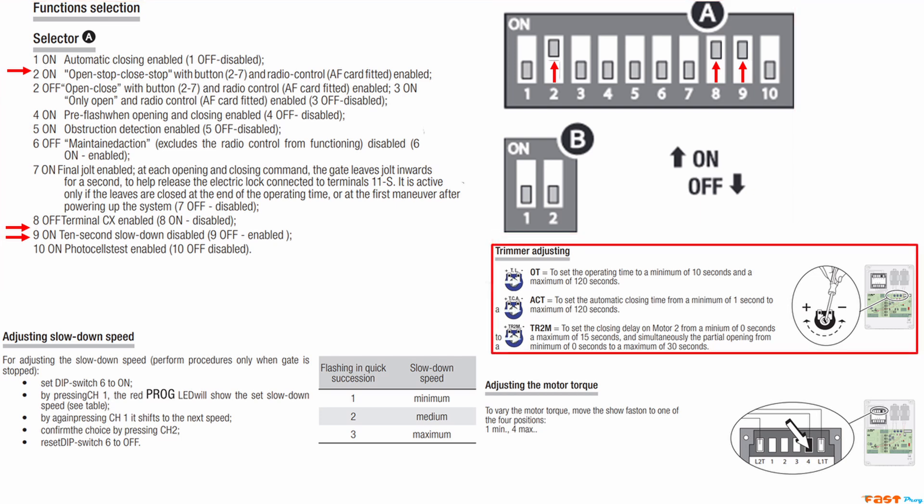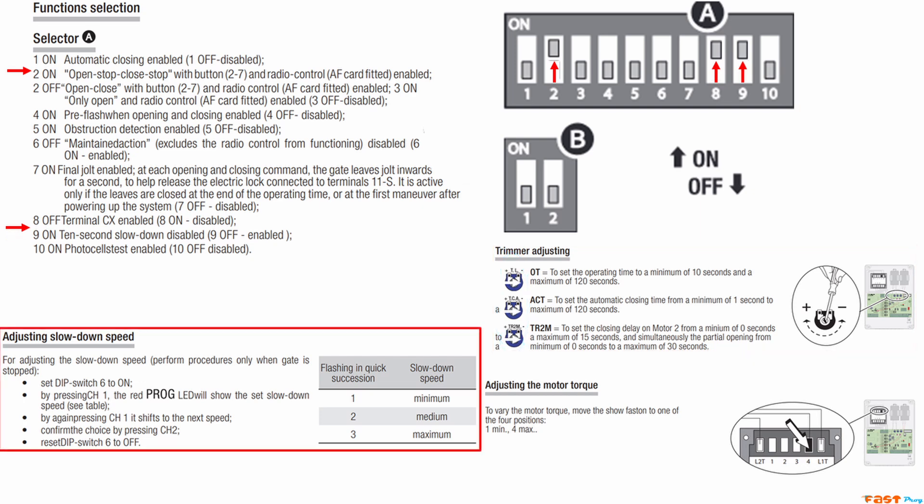For the three potentiometers, turn the arrow of each one horizontally to the right. As for the slowdown feature, for now, I've had you disable it using switch 9. You can turn it back on once the motors are operational.